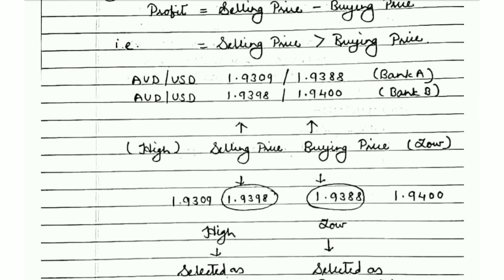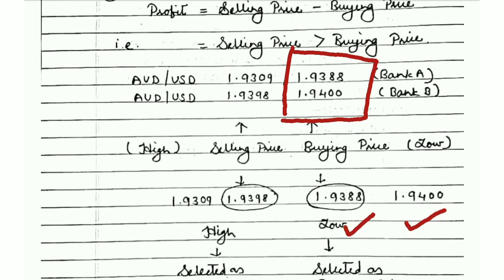The first step is to identify from where to purchase and to which bank to sell. To find the buying price, we look at the ask rates offered by both banks — that is our buying rate. Comparing 1.9388 (Bank A) and 1.9400 (Bank B), the lowest ask rate is 1.9388.